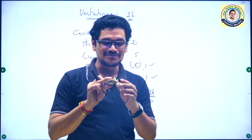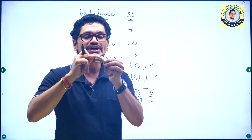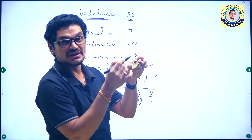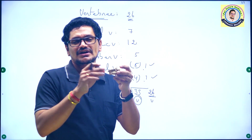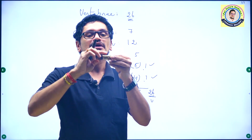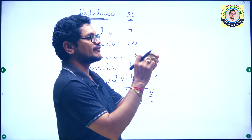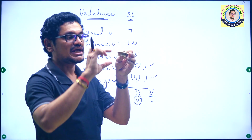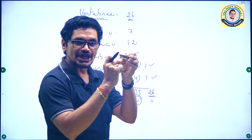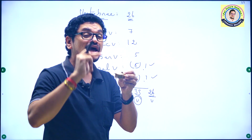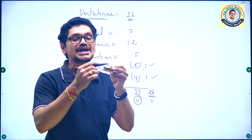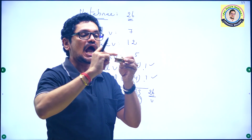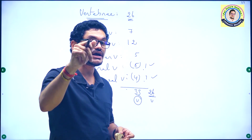Centrum is not the central part of the vertebra. Centrum is the base body of the vertebra. This is the anterior part of the centrum and this is the posterior part. The shape of the centrum can vary — it may be heart-shaped, kidney-shaped, and so on. The anterior part of the centrum is flat, and the posterior part is also flat.